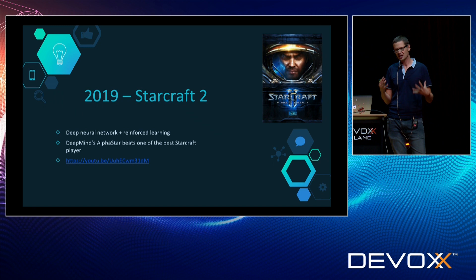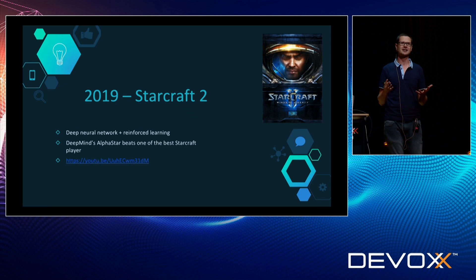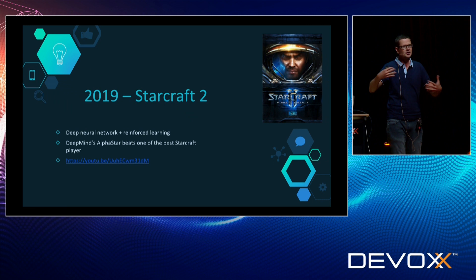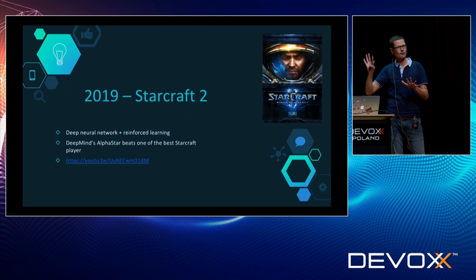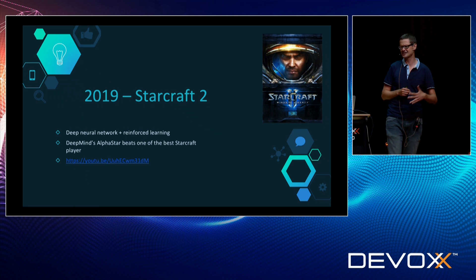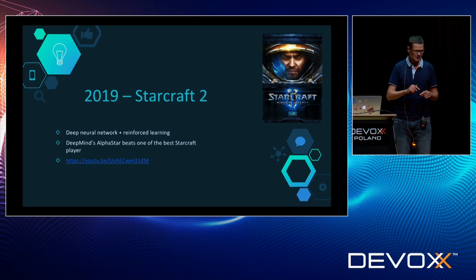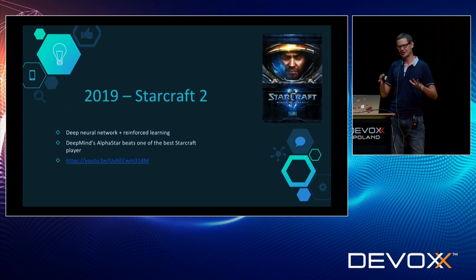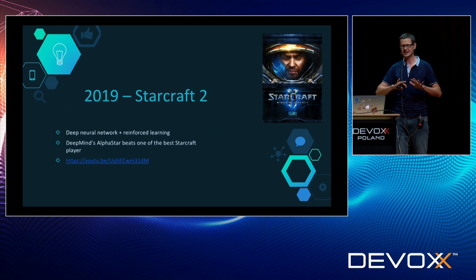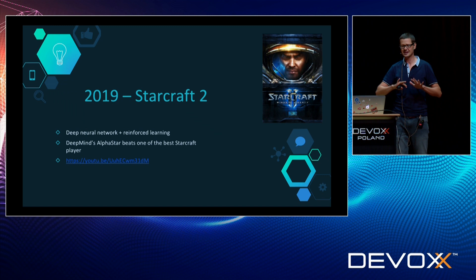StarCraft is also a much more complicated game than chess or Go. In chess you see the whole board all the time — you can't bring new units. In StarCraft, you don't see the entire map, there's a fog of war, you can produce new units, units are different, and there are different races with different attributes and special skills. The map is not a fixed board — it's really complicated. There's also a macro economy where you gather resources and micro tactics for battle. The complexity is incredible, and yet reinforcement learning plus deep neural networks were able to create a program that beat a human player.